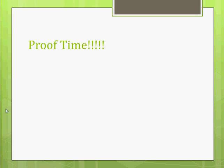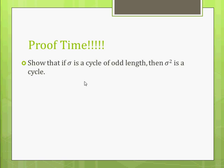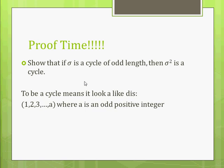Proof time. I believe this is our final piece of the lecture today. Show that if σ is a cycle of odd length, σ² is a cycle. So, remember a cycle looks like this. And in this case, it's going to a, the final number, which we're defining as a positive odd integer, because it's got to have odd length.